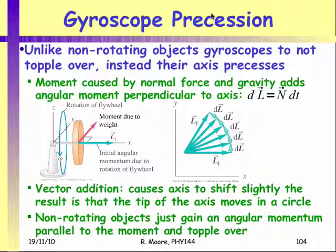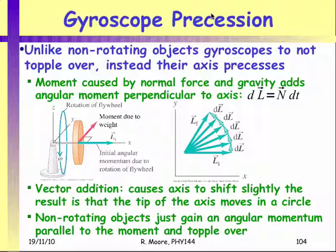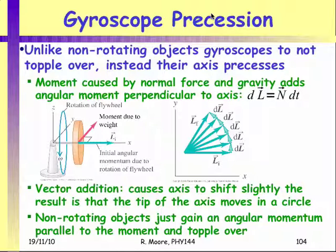If you have a gyroscope and you support it at one end, you have a large angular momentum along the axis of rotation. The center of mass of the gyroscope is in the center, so its weight acts vertically down there, and you have a normal force acting vertically up at the support. So you've got a force up there and a force down there, creating a moment that's trying to make the gyroscope rotate.